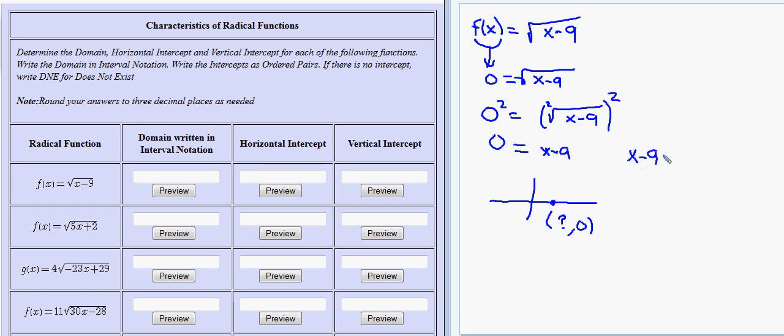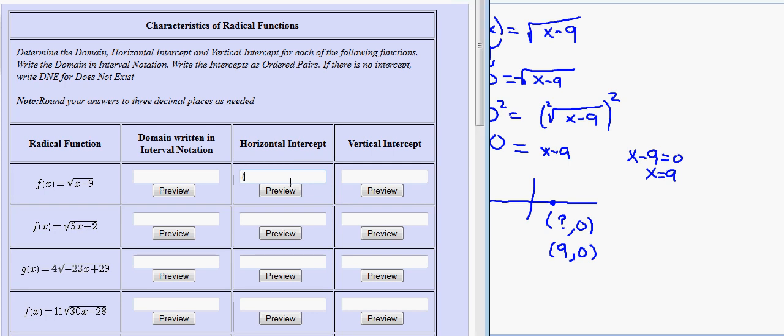We have x minus nine equals zero. If you added the nine over you would have x equals nine. So nine comma zero is the ordered pair that represents the horizontal intercept. I'm going to write that in right now. I'm going to click on this field and type in nine comma zero.